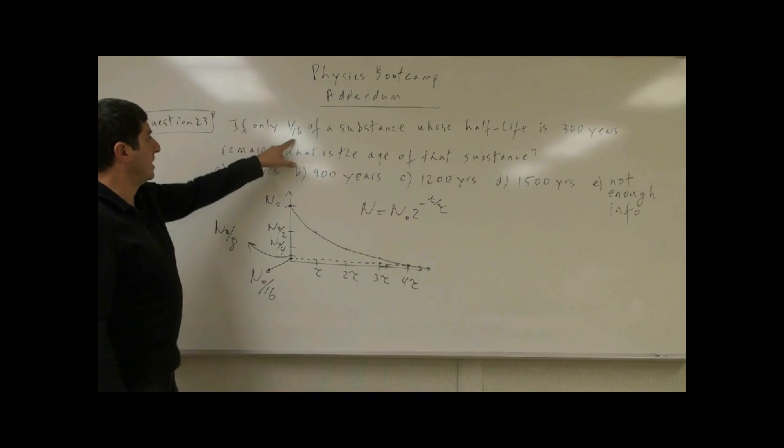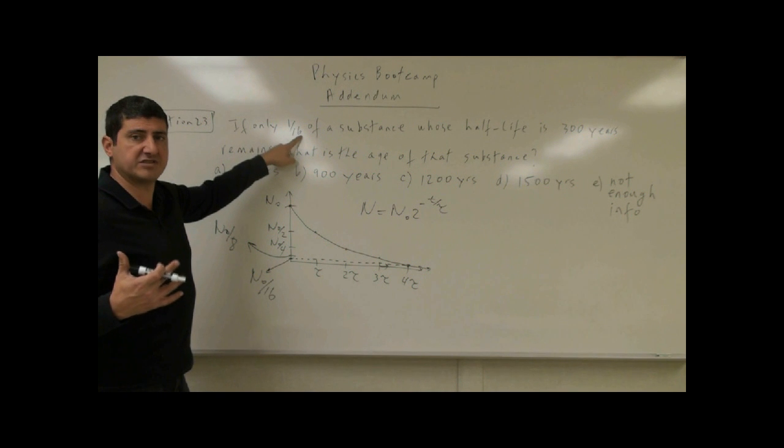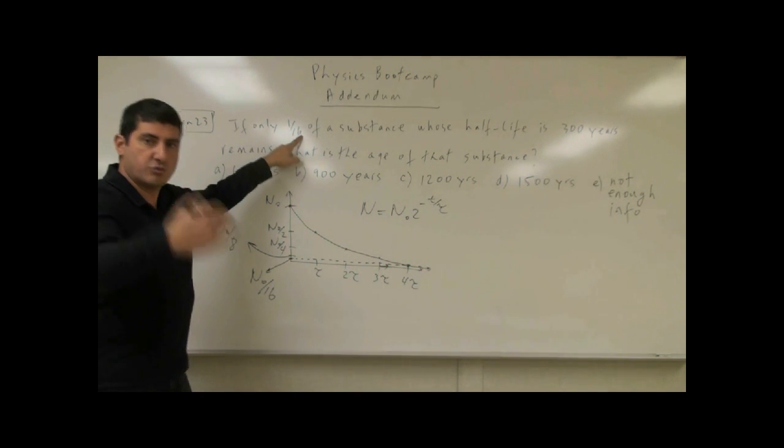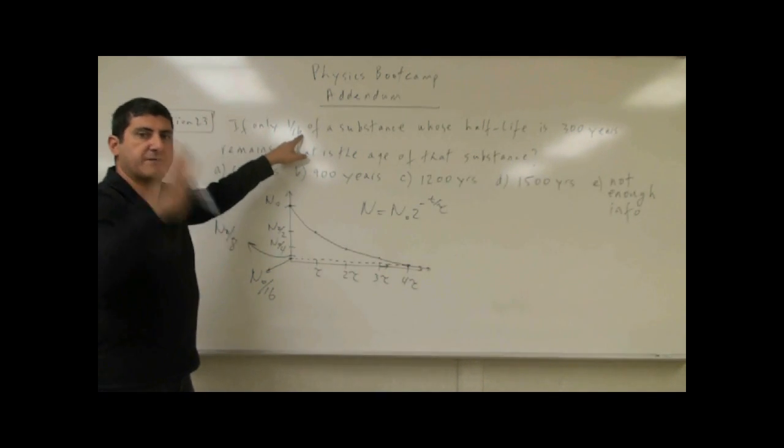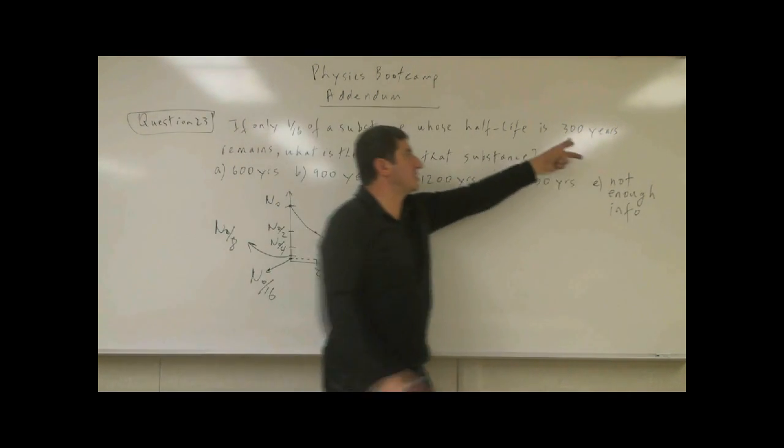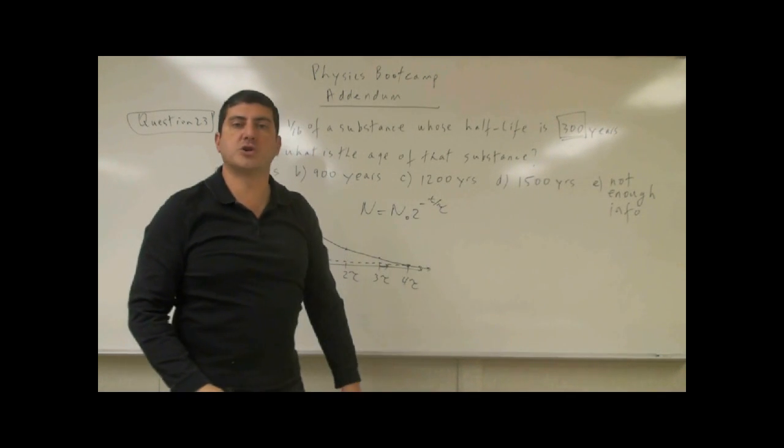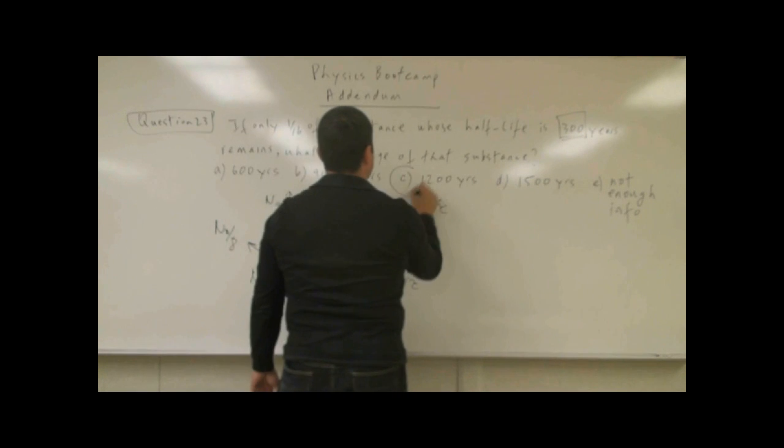So in this case, how much of the substance is remaining? One-sixteenth. How many half-lives is that? One-half, one-fourth, one-eighth, one-sixteenth. Four half-lives. So if the half-life is 300 years, four half-lives is 1,200 years. C is the answer.